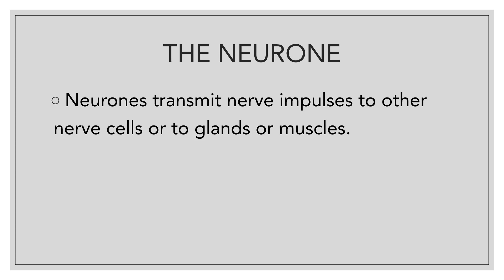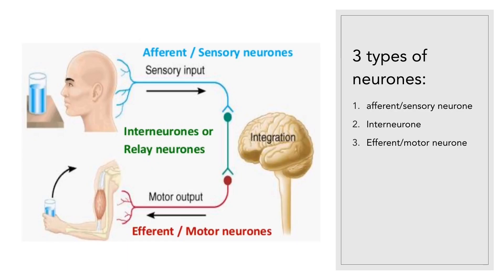What is a neuron? Neurons transmit nerve impulses to other nerve cells, or to glands, or to muscles. There are three types of neurons: the first one is the afferent or sensory neuron, the second one is the interneuron, and the third one is the efferent or motor neuron.